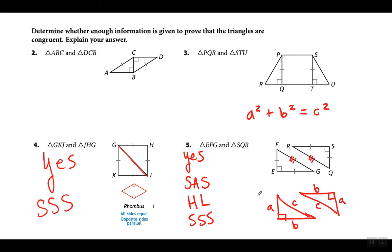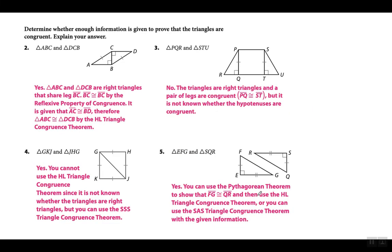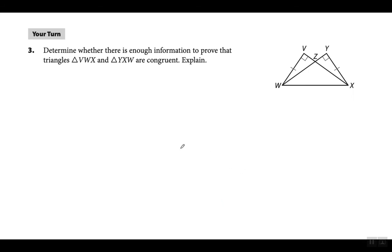Moving on — same type of question: determine whether there is enough information to prove that these triangles are congruent. If you look at both of them, they're right triangles because they both have a 90-degree angle. This leg is congruent to this leg, and they both have the same hypotenuse — this side they both have in common is the hypotenuse for both of them. Therefore, yes, by the hypotenuse leg triangle congruence theorem, they are congruent.